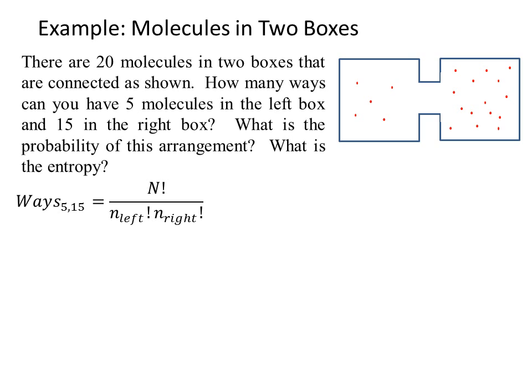Well, the ways to have 5 left and 15 right is given by this formula, where the capital N is 20, so it's 20 factorial, divided by 5 factorial for the number on the left and 15 factorial for the number on the right. The 15 factorial cancels quite a bit of the 20 factorial, leaving only 20 times 19 times 18 times 17 times 16, and the 5 factorial on the bottom is just 5, 4, 3, 2, and so on.